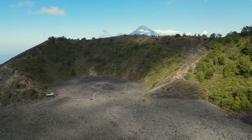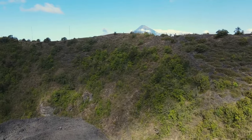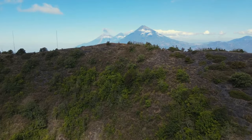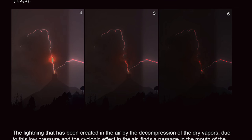Auf diese Weise werden wir an einem Beispiel die Kontinuität der Natur und die Elemente sehen, die alles rekapitulieren, was wir zu diesem Thema bisher gesagt haben. Hier haben wir ein zusammengesetztes Beispiel, in dem wir all dies vollständig sehen können. Zunächst werden trockene Dämpfe der Luft aus der Wolke freigesetzt — hier auf Bild 1 zu sehen — und Blitz entsteht, Bild 2, wodurch ein Wirbeleffekt und ein Niederdruck entstehen. Also Bild 1, 2 und 3 beschreibt dieses Phänomen. Der Blitz, der durch die Dekompression der trockenen Dämpfe in der Luft entstanden ist, aufgrund dieses Niederdrucks und des Wirbeleffekts, findet einen Durchgang im Mund des Vulkans, während er abwärts wandert — hier auf Bild 4, 5 und 6.